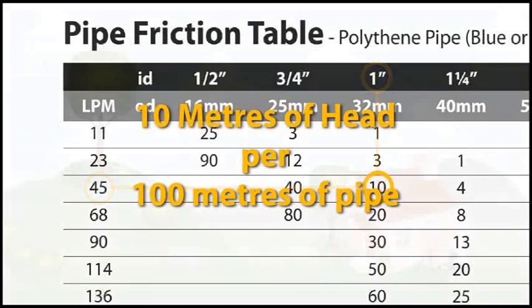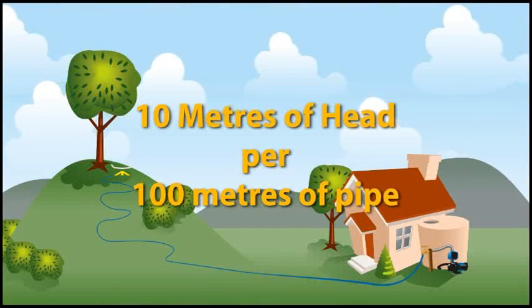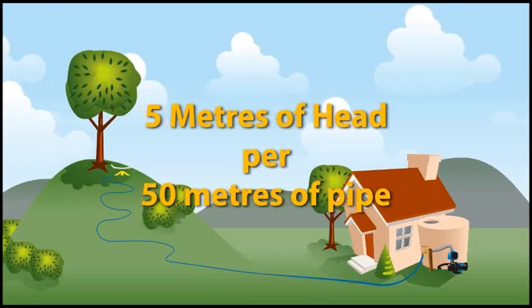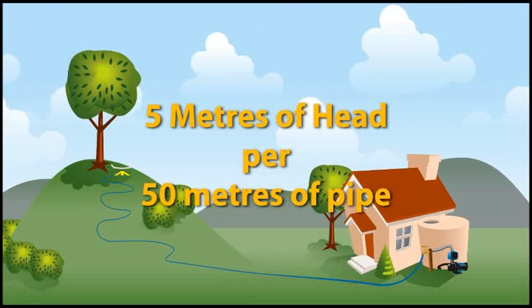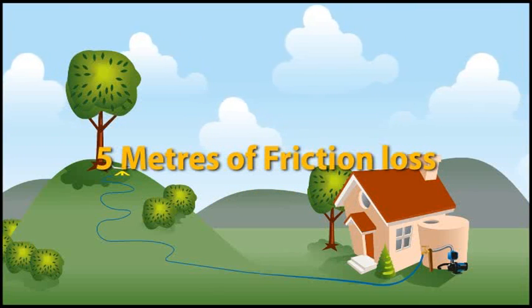However, as we know, in this chart, all values apply to 100 metres of pipe. In Aunty Flo's case, she only requires 50 metres of pipe. Therefore, we must halve the value. Half of 10 is 5. 5 metres is therefore our friction loss.